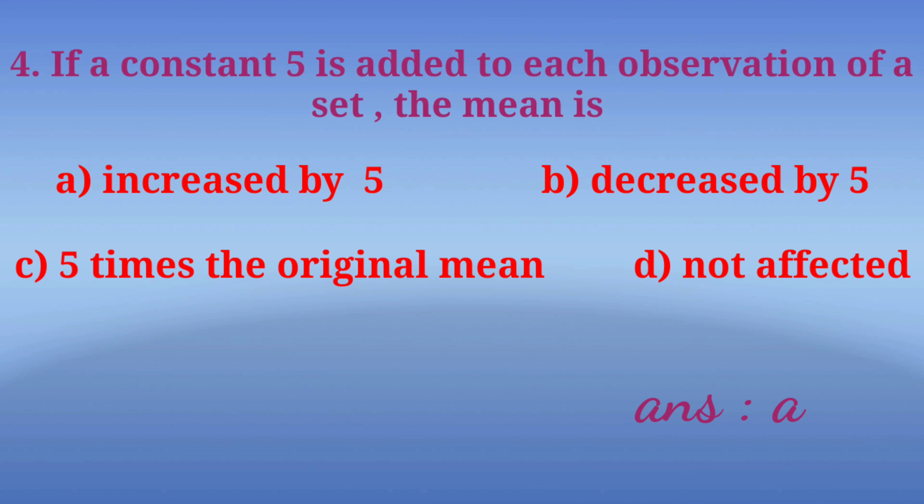Fourth question: If a constant 5 is added to each observation of a set, the mean is: Option A: increased by 5, Option B: decreased by 5, Option C: 5 times the original mean, Option D: not affected.